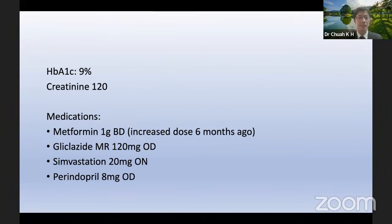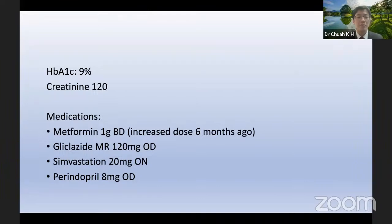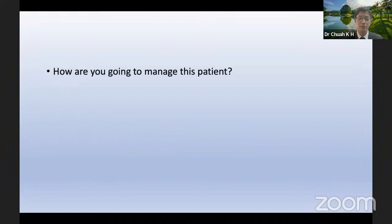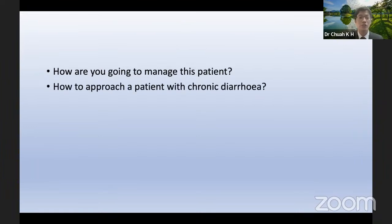Back to the slides. The patient has HbA1c of 9%, creatinine 120, and her metformin was recently increased to 1g BD. She was also on glicozide, simvastatin, and perindopril — quite standard medications. How are you going to manage this patient? I'm sure you see this kind of situation quite often — not only among gastroenterologists, but also in outpatient clinics, GP settings, and KK settings. In other words, how do we approach a patient with chronic diarrhea?